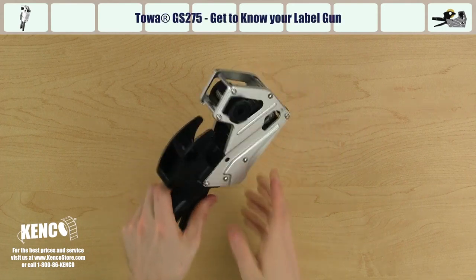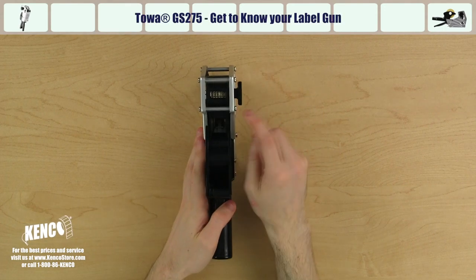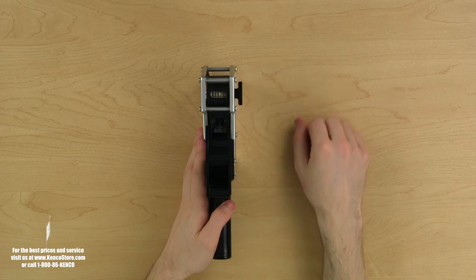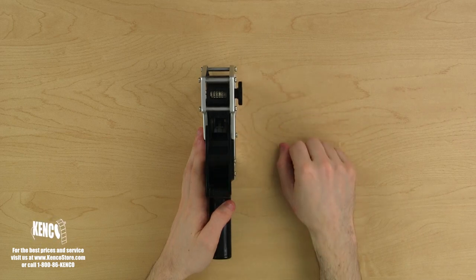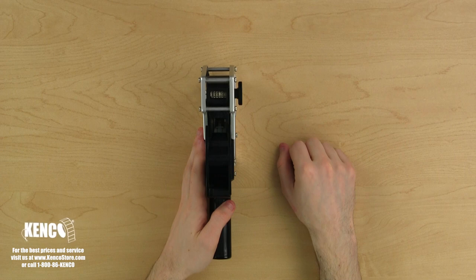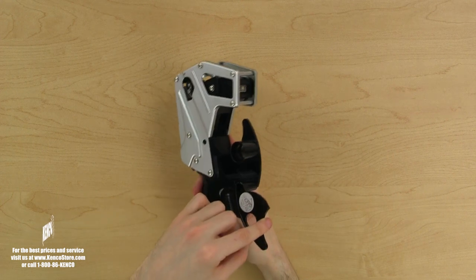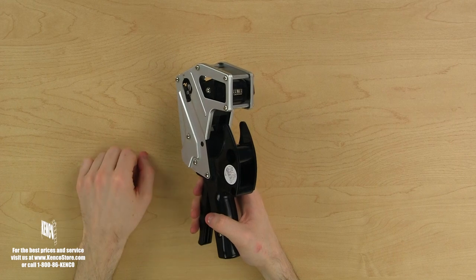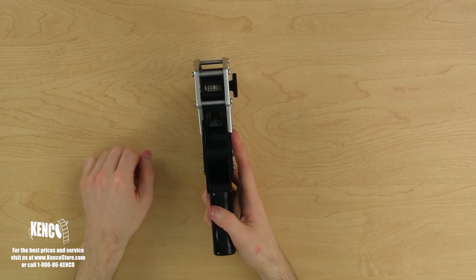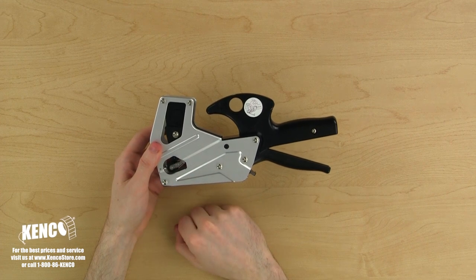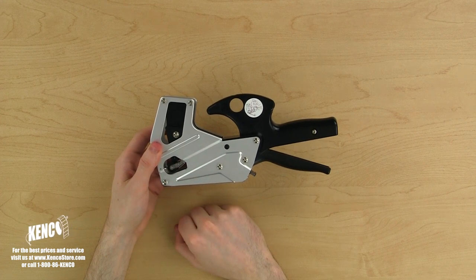Let's pick up the gun with our left hand and take a look at the top. Right away, you will notice the print head and the adjustment dial. Below, you will see the label housing assembly. This is where the labels will rest when the gun is properly loaded. On the left hand side of the label housing assembly is the housing cover. This will secure your labels in place when the gun is in use. Rotate the gun to the left side. Here, you will see the ink roller assembly resting below the print head.